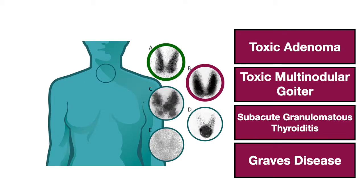Let's now go over the fun part, where we discuss different thyroid scan results and try to associate them with their underlying pathologies. Here we have images A through E. Just keep in mind that image A is what you see with a normal thyroid gland, and the different pathologies we're going to discuss are included on the right-hand side.